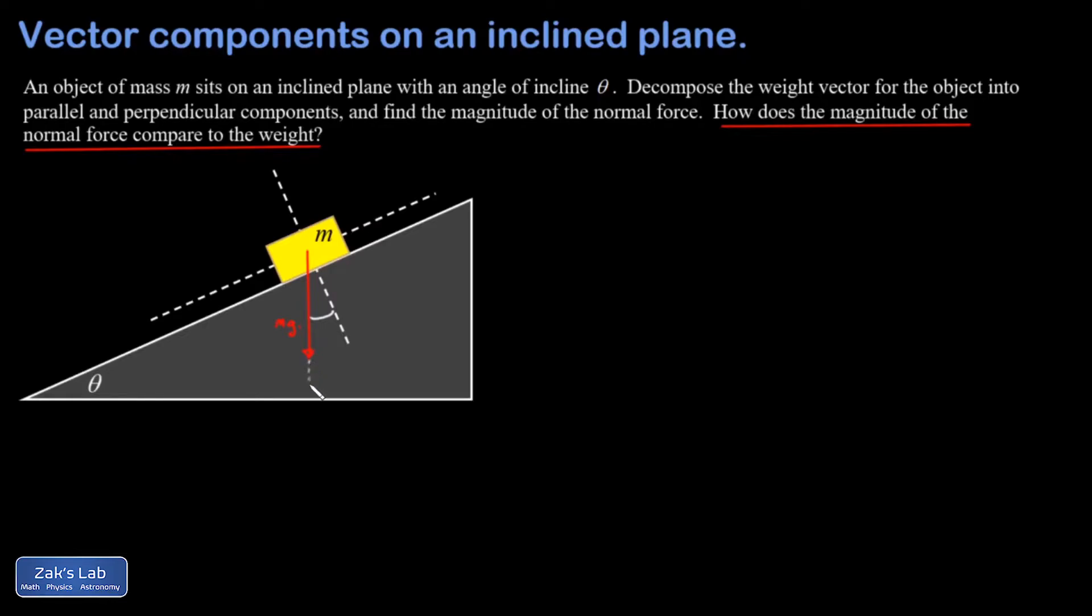What we do is draw a right triangle right here and say that the sum of the angles in a triangle is 180 degrees. So theta must add with this angle to give us 90 degrees. In other words, this angle is 90 minus theta.